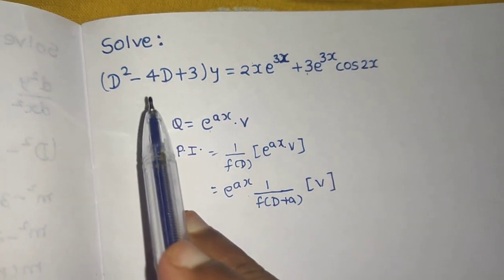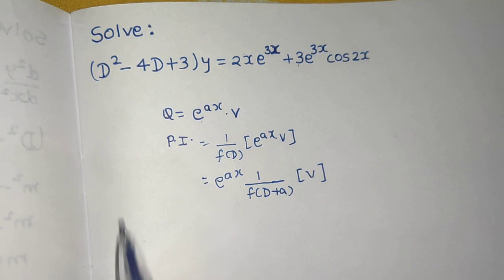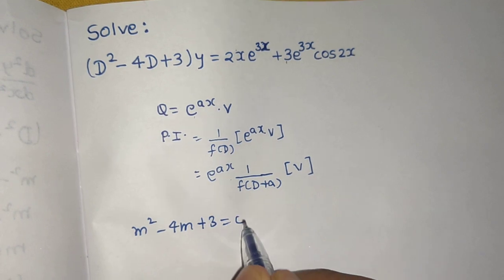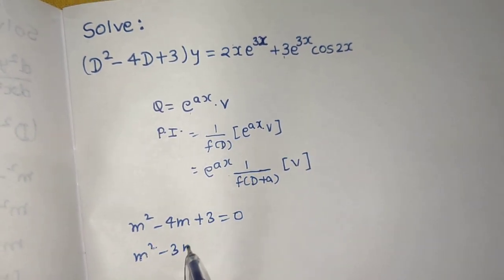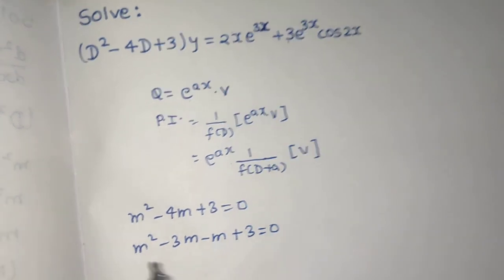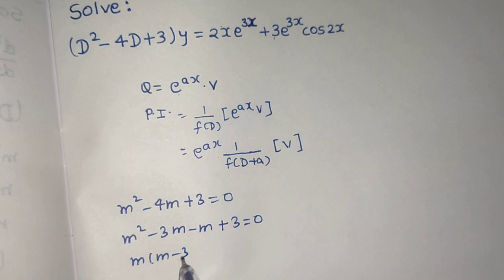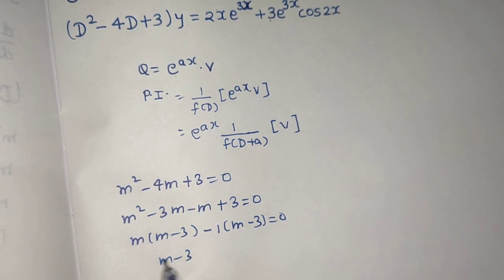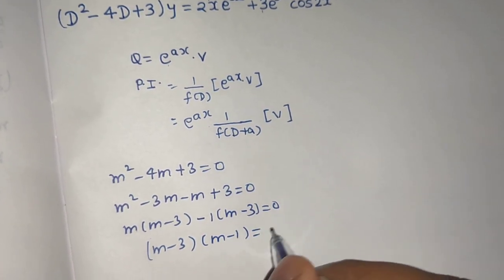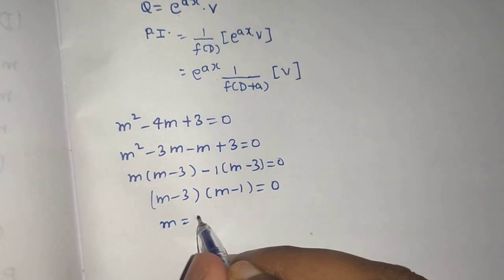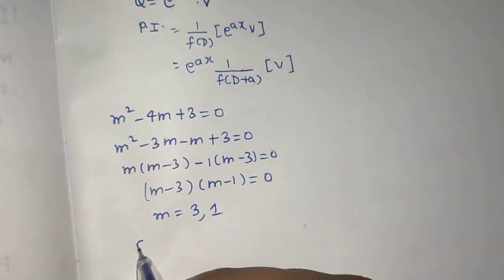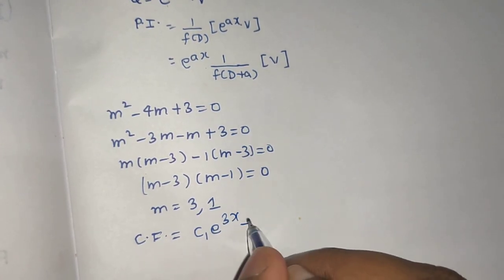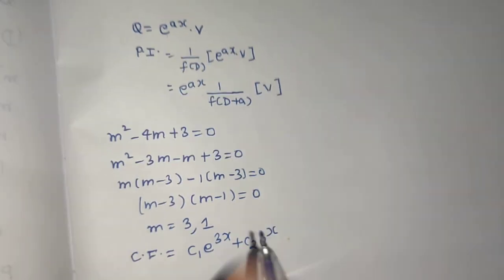First we'll find the complementary function. Convert from D-form to m-form: m² - 4m + 3 = 0, which factors as m² - 3m - m + 3 = 0, giving m(m-3) - 1(m-3) = 0, so (m-3)(m-1) = 0. From here we get m = 3 and m = 1, which are real and distinct roots.